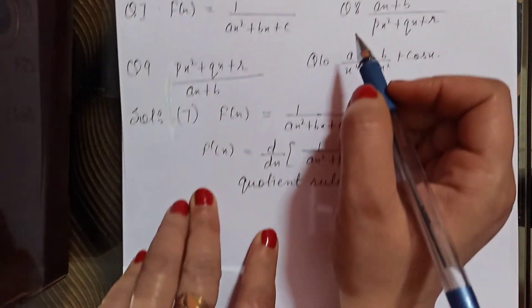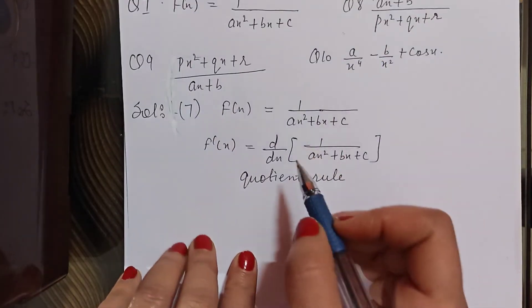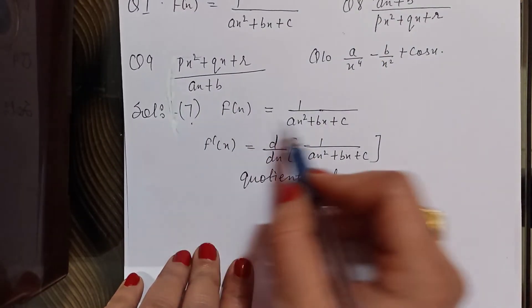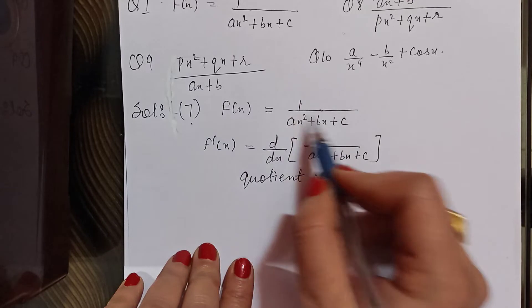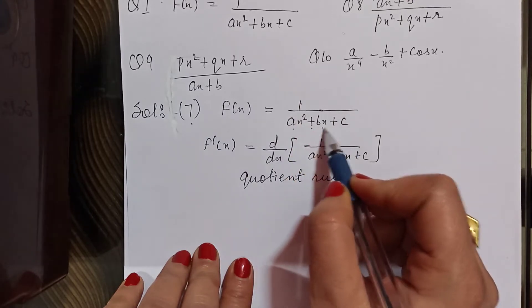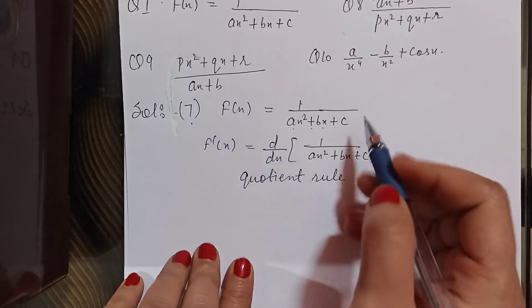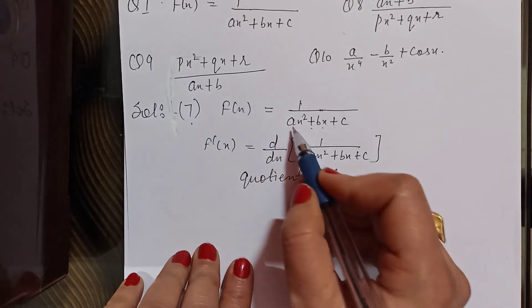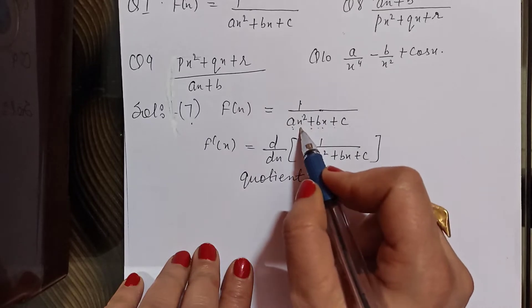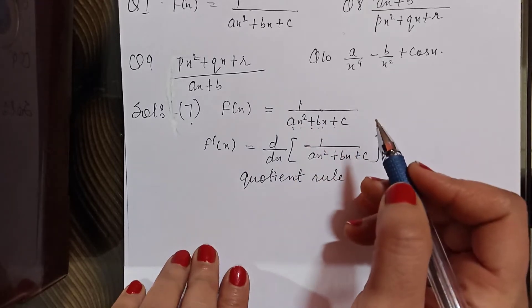Question number 7: find the derivative of 1 upon (ax² + bx + c). Here A, B, C are constants and x is the variable.